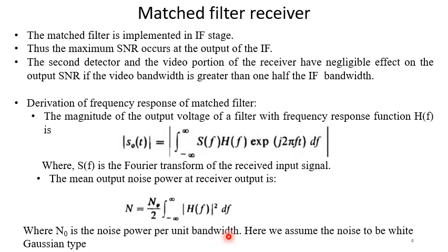Where N_0 is the noise power per bandwidth. Here we assumed that noise to be a white Gaussian type.